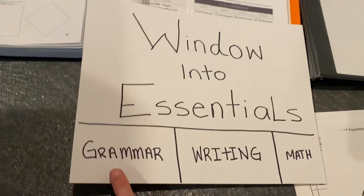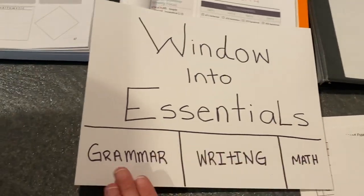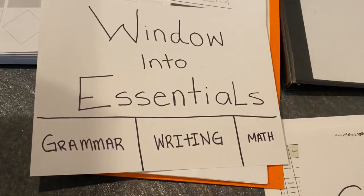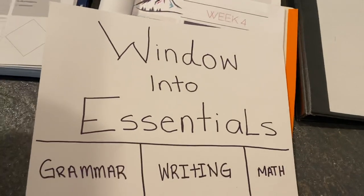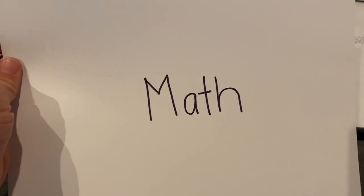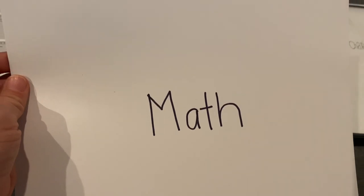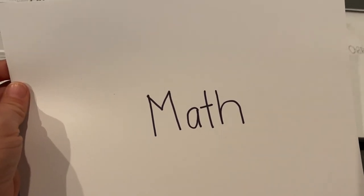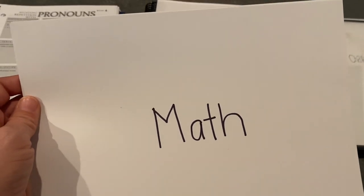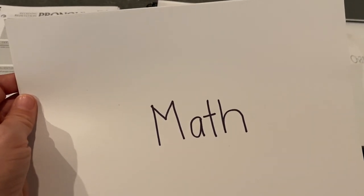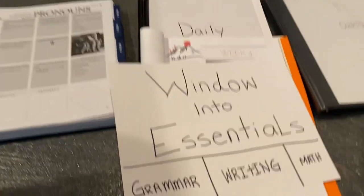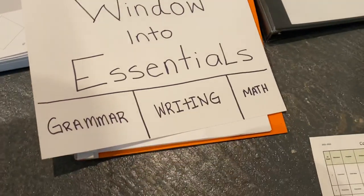Essentials is a three-strand program: grammar, writing, and math. We've handled grammar. Math is easy — this is not a full math curriculum; you need to choose your own full math curriculum to run at home. But during class, students will play fun games that everyone can participate in to reinforce math concepts, working at whatever math level they're at with zero embarrassment. It's just a game portion of the day. The third strand is the writing portion.